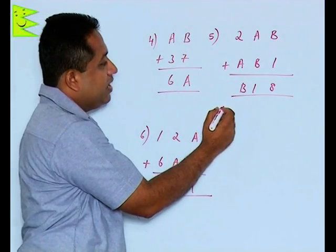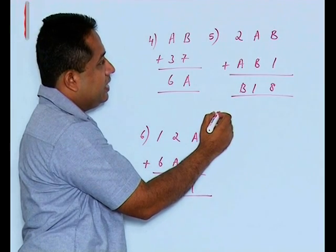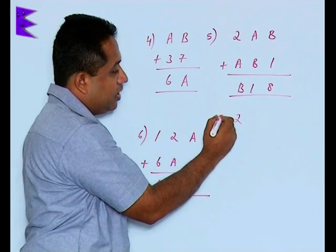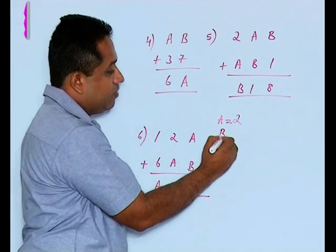So here, if I'm going to rewrite this, I can say that A will be 2 and the value of B will be 5.